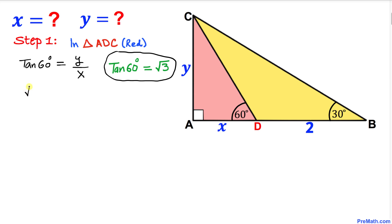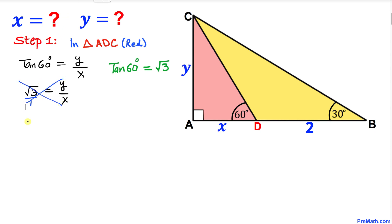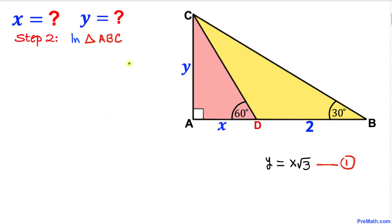We can write square root of 3 equals Y over X. Multiplying both sides, we get Y equal to X times square root of 3. Let's call this equation number 1.